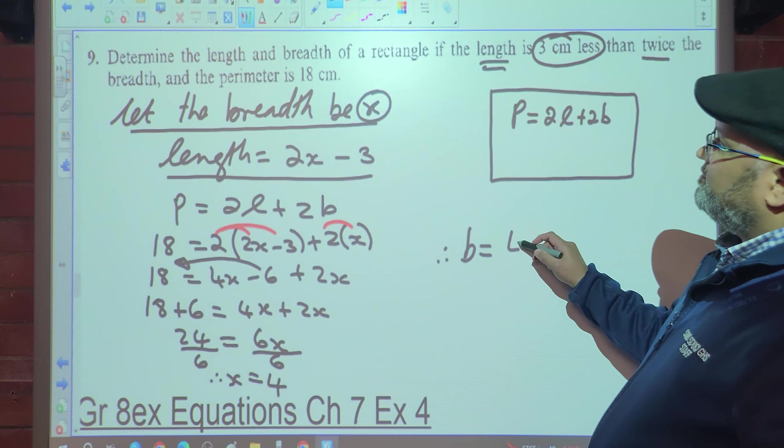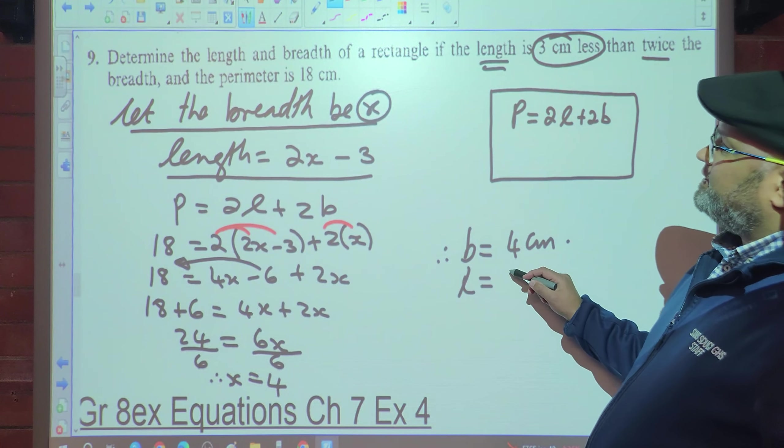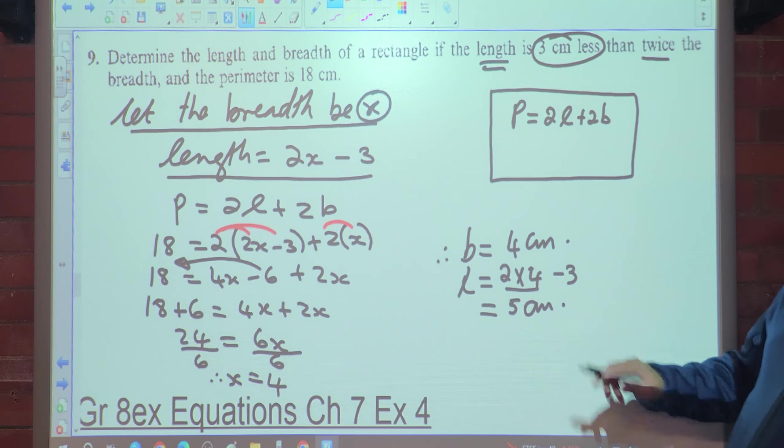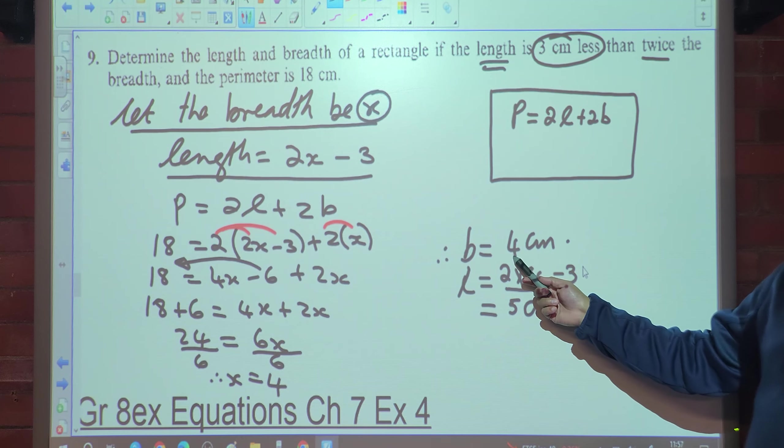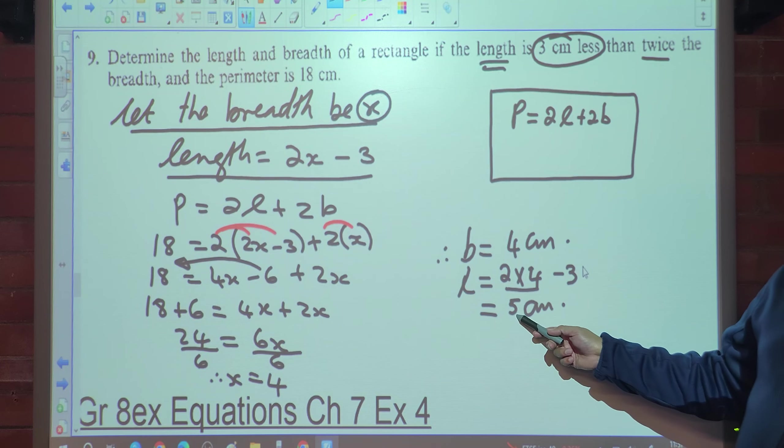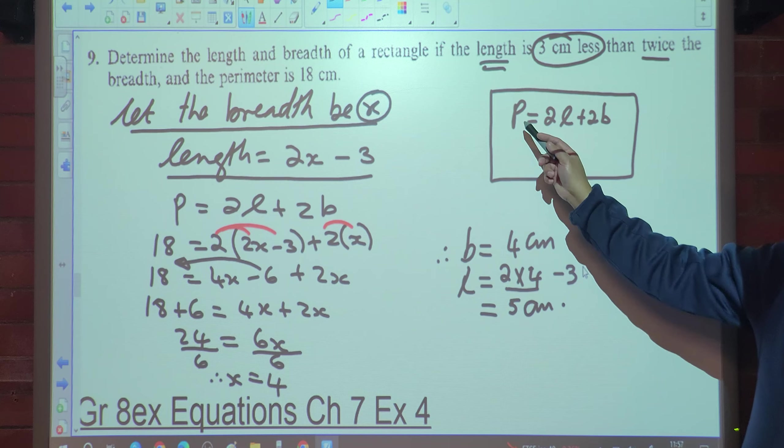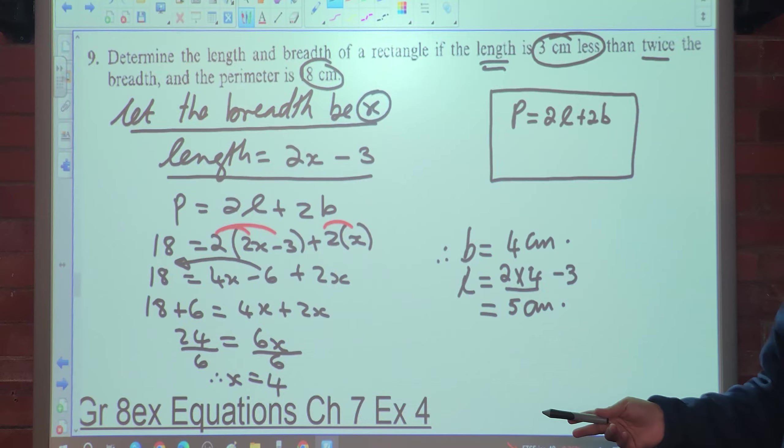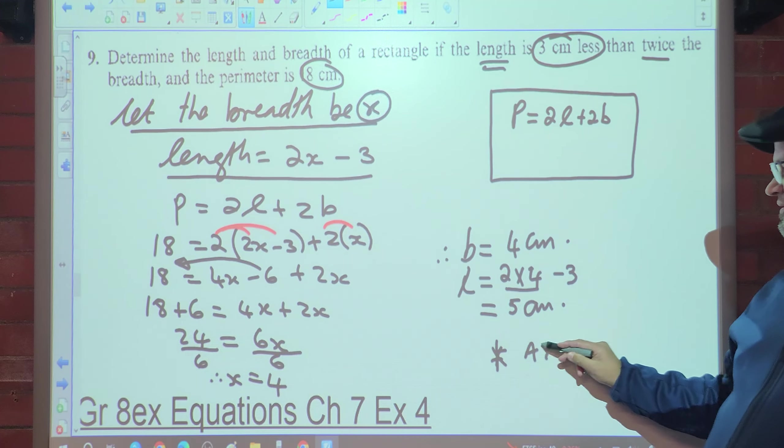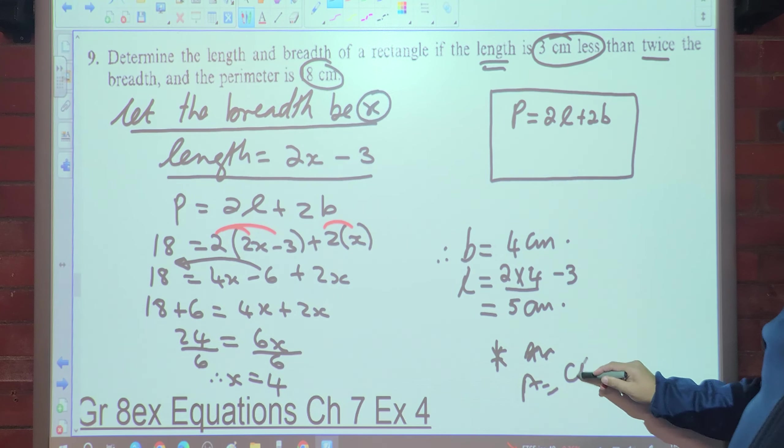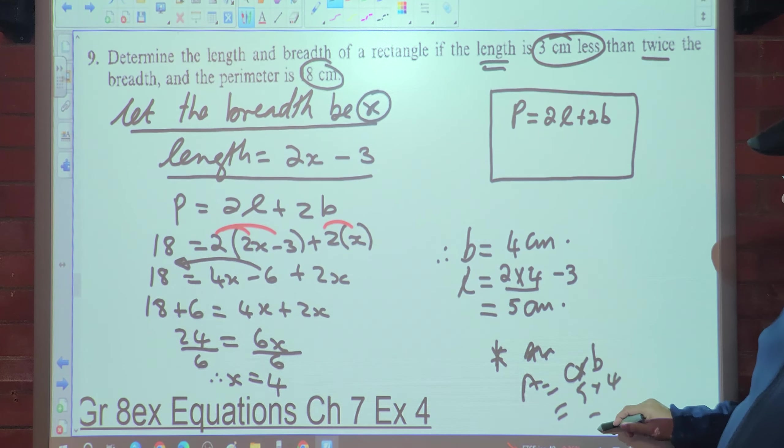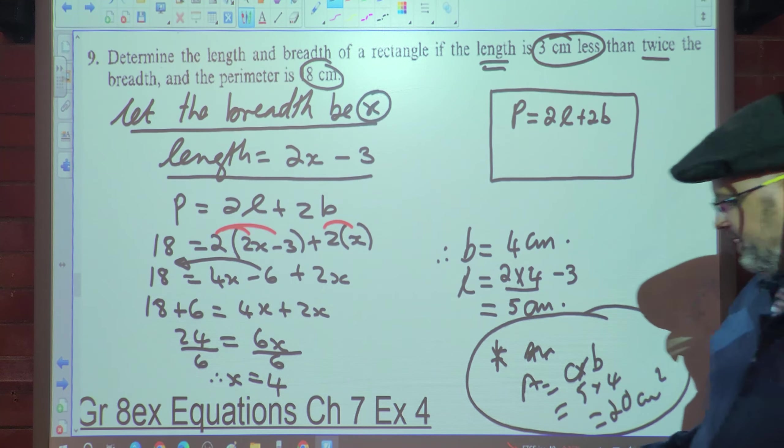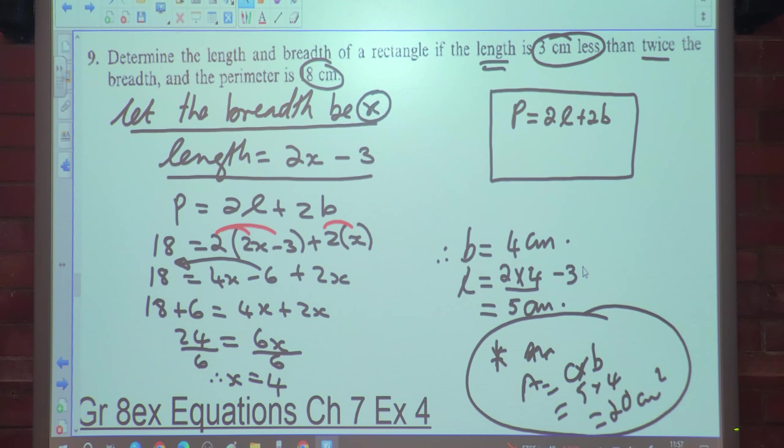Therefore the breadth is 4cm and the length is 2 times 4 minus 3. 2 times 4 is 8 minus 3 is 5cm. And we can test it. What's 2 times 4? 8. 5 times 2? 10. 8 plus 10 is 18, which is of course the perimeter. If they had asked us to calculate the area, the area would have been length times breadth, which is 5 times 4, which is 20cm squared. That was not asked. Do you guys understand? Any confusion here?